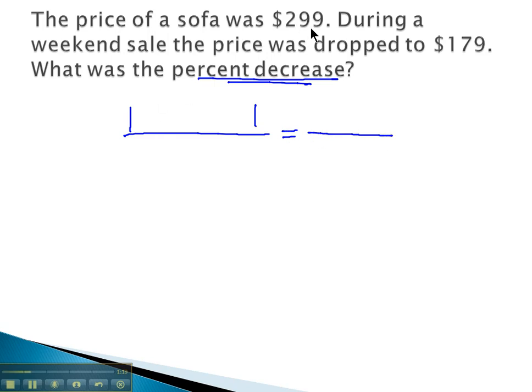The old price we see is 299, minus the new price we see is 179, over the old price, which is 299, equals the percent. That's what we're looking for. What's the percent decrease over 100?